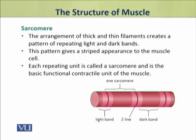Dear students, ये جو thick اور thin filament کی arrangement ہے myofibril کے اندر، اس کی وجہ سے muscle cells میں ایک خاص قسم کے light اور dark bands کا pattern produce ہوتا ہے، جس میں light bands alternate کرتے ہیں dark color کے bands سے۔ اس کے نتیجے میں muscle cells میں striped appearance یعنی striations produce ہوتی ہیں۔